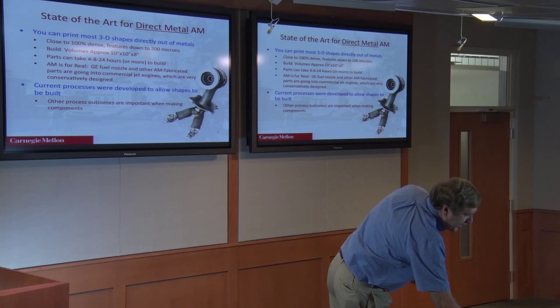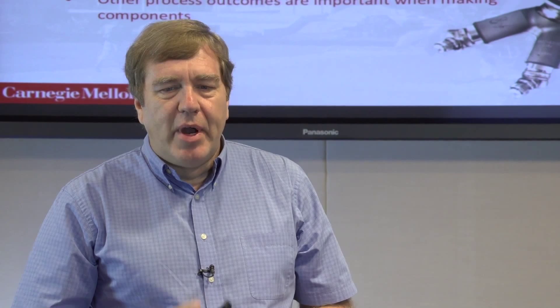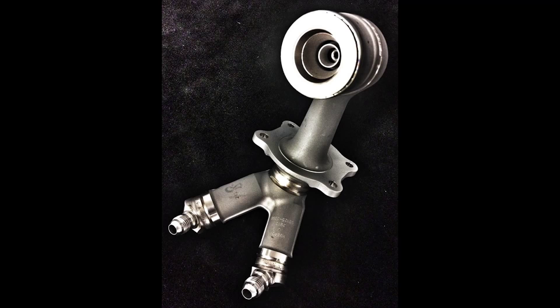One downside is it can take a while to make these parts — depending on the process and the part size, you can go up to 24 hours or longer. However, additive manufacturing is definitely here to stay. I've got a picture of the GE jet engine fuel nozzle, which they're incorporating into the next generation LEAP engine at GE. They will be making tens of thousands of those per year within the next year.